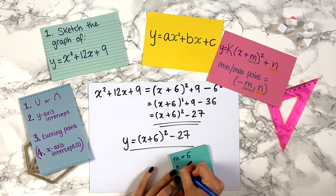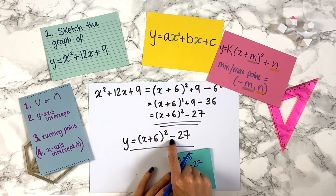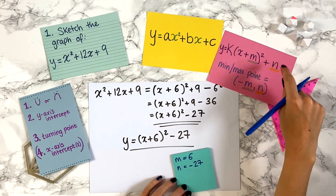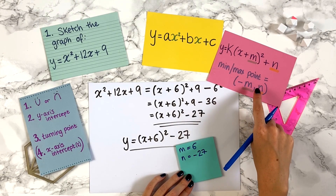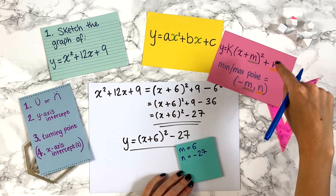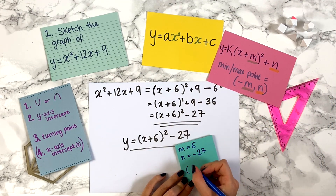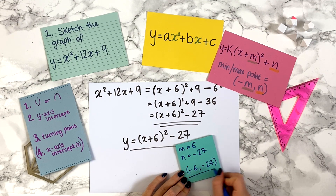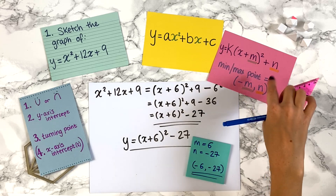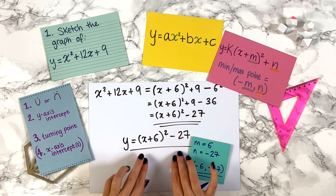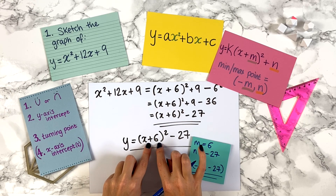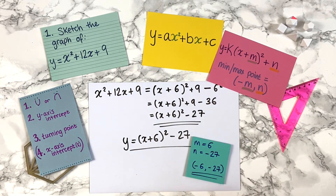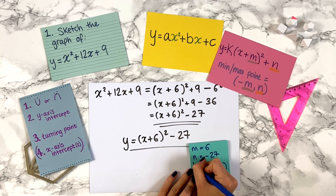Here m is 6 and n is minus 27. The turning point is at (−m, n), so that's (−6, −27). I normally just look at the completed square version and think: the coordinates are at minus this number, comma this number — so minus 6, minus 27. Some people prefer the formal m and n approach, but either way the turning point coordinates are (−6, −27).